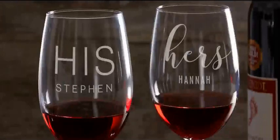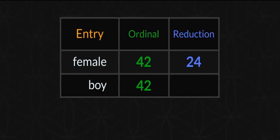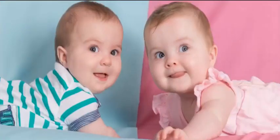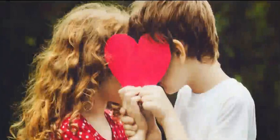We've heard the saying 'his and hers.' Well, 'hers' is a super match with 'pink' — pink is associated with girls and women from birth. And you even get 23 in 'male,' and the color blue associated with the male. You see the 13s there. As a bonus: 'female' equals 42, like 'boy' equals 42, and then the reflection is 24. It all starts from childhood when we're most easily manipulated.